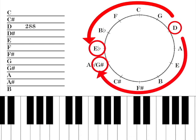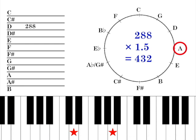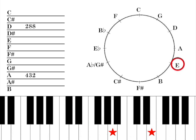Up a fifth from D is A. Since D is 288 Hz, A has a frequency of 288 Hz times 1.5, which is 432 Hz. Up a fifth from A is E. It has a frequency of 432 Hz times 1.5, which is 648 Hz. Now let's tune the E one octave below, which is achieved by dividing by 2. That E is 324 Hz.